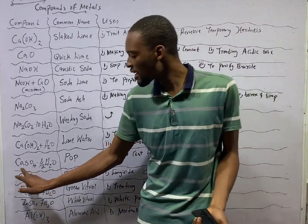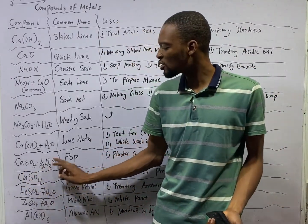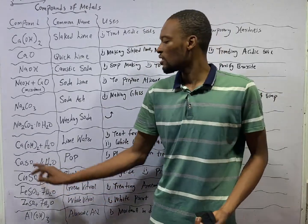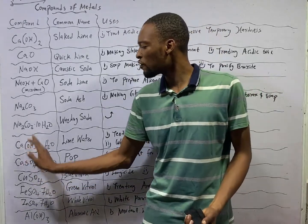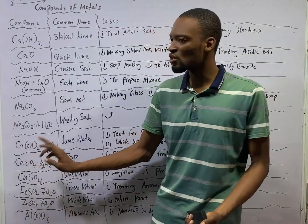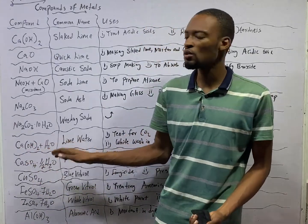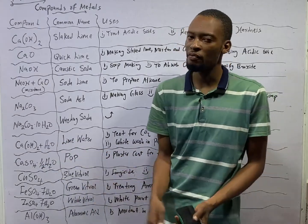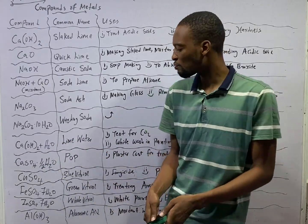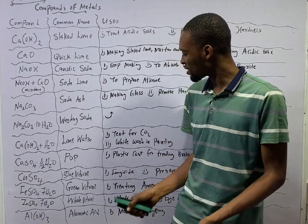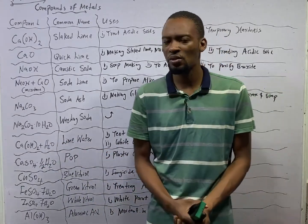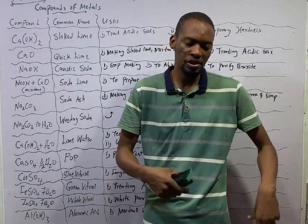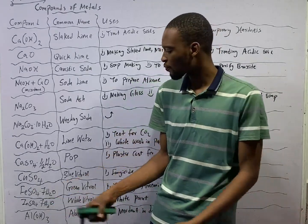CaSO₄·½H₂O or CaSO₄·2H₂O is referred to as plaster of Paris, POP. Plaster of Paris is used as plaster cast for the treatment of wounds in the hospital.